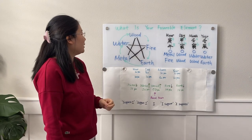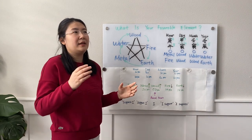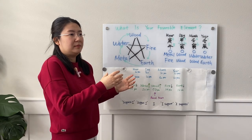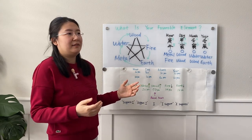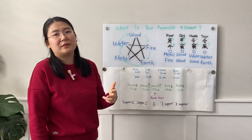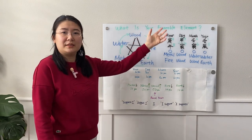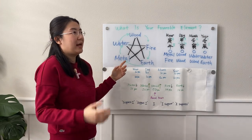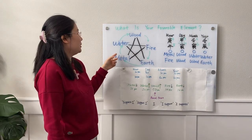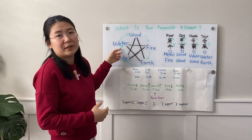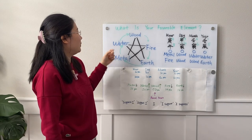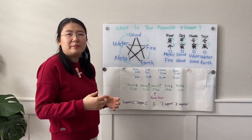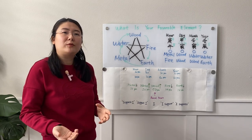Metal supports water. Think about how most big rivers come from big mountains. In China, the Yangtze River and Yellow River both come from the Himalayan mountain range. So the mountain has metal, and metal grows water — that's the birthplace of water. Another way to think about it is that when you melt metal, it becomes liquid.